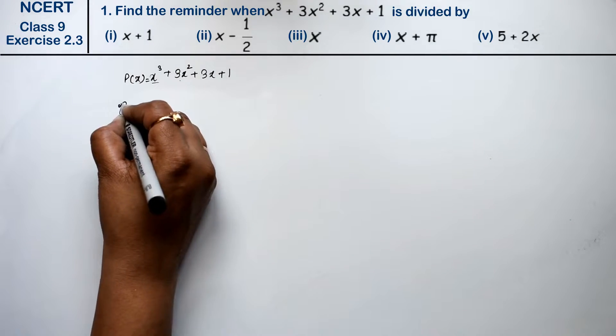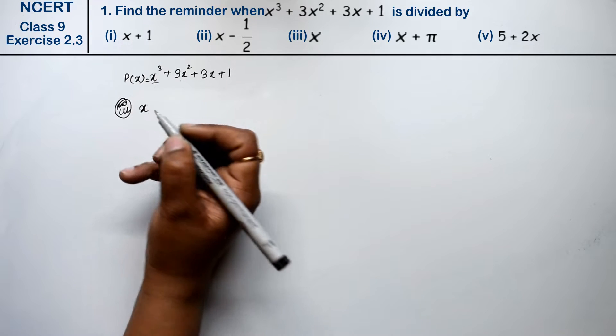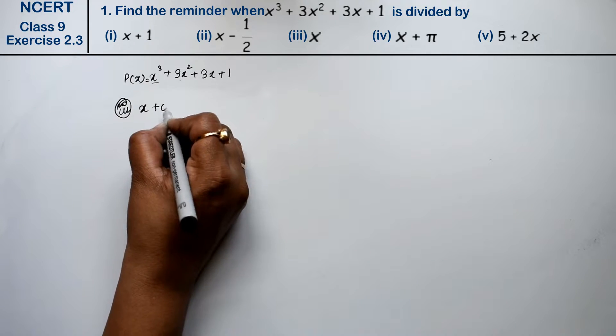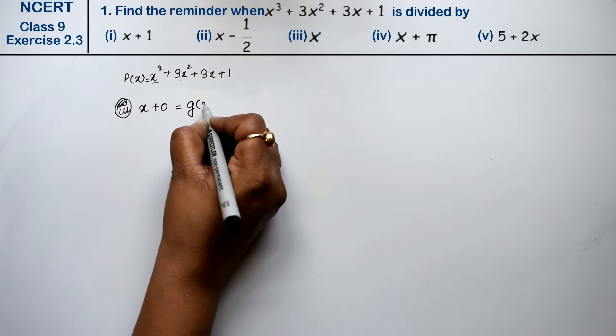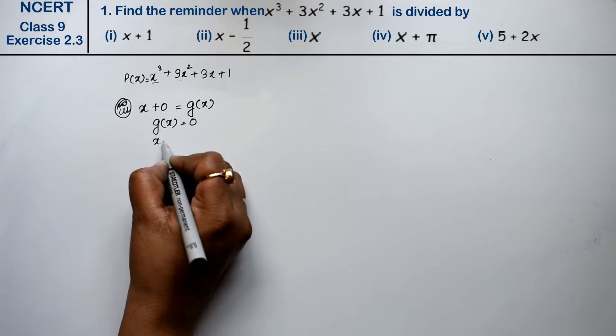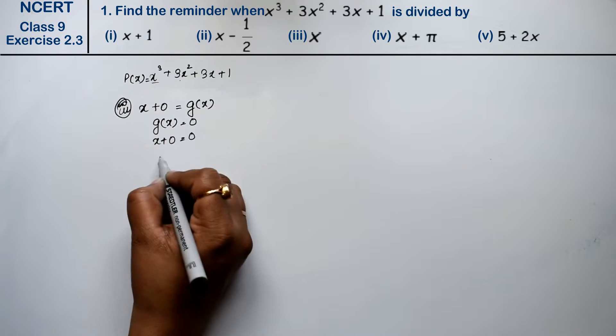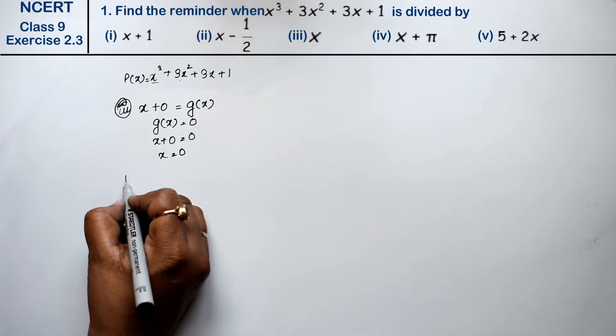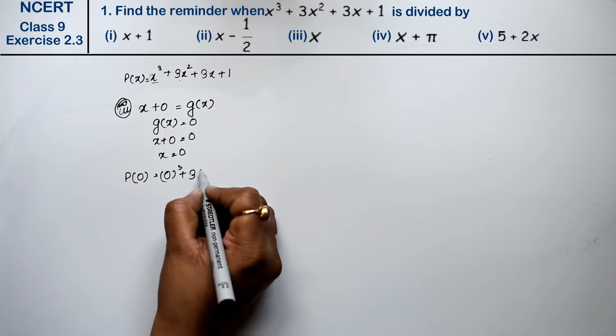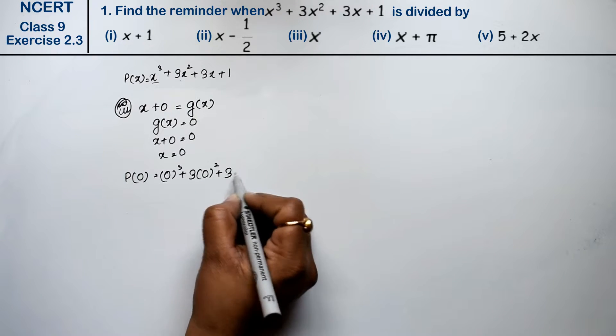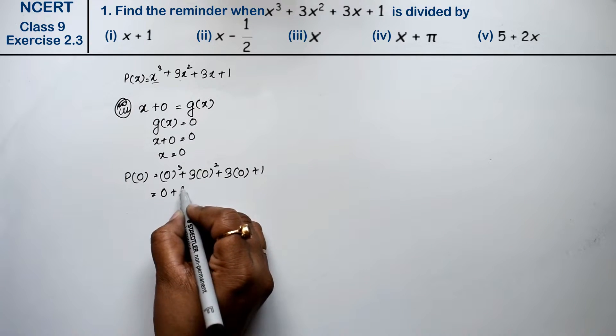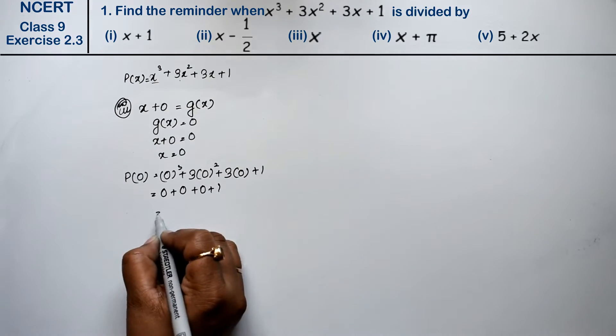Third part. x is given with no value, so we take x value as 0. x plus 0 equal to g(x). We write g(x) equal to 0, so x plus 0 equals to 0, x equals to 0. Now in p(x), x value is 0. So 0 cubed plus 3 into 0 squared plus 3 into 0 plus 1 equals 0 plus 0 plus 0 plus 1. So 1 is the answer.